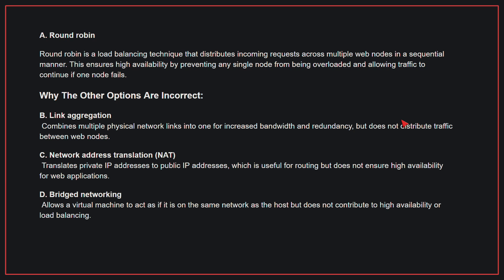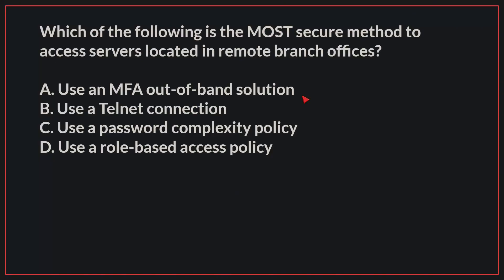D, bridged networking: this allows a virtual machine to act as if it is on the same network as the host, but does not contribute to high availability or load balancing. Therefore, the correct answer is A, round robin. Which of the following is the most secure method to access servers located in remote branch offices?